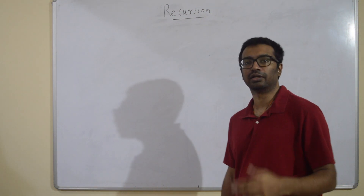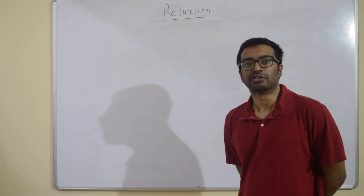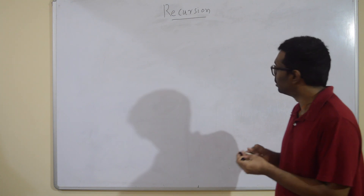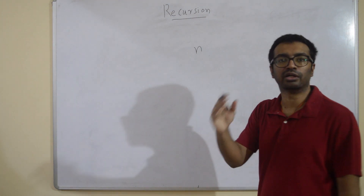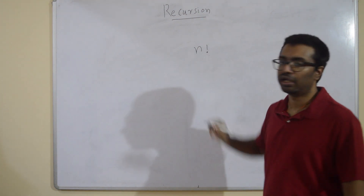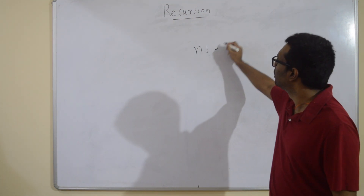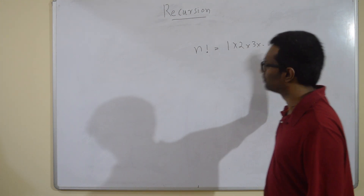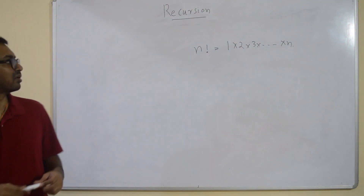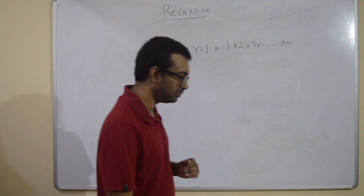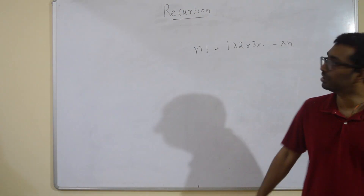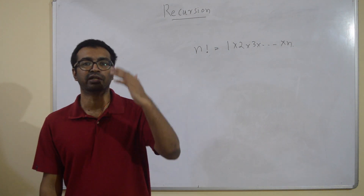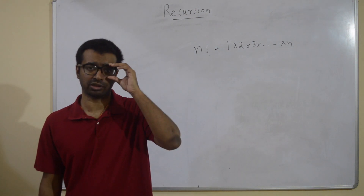The first problem people always see in a recursion class is the factorial problem. You are given a number n and you are interested in finding n factorial. N factorial is 1 × 2 × 3 × ... × n — the product of all numbers from 1 to n. You need to write a recursive function which outputs n factorial.